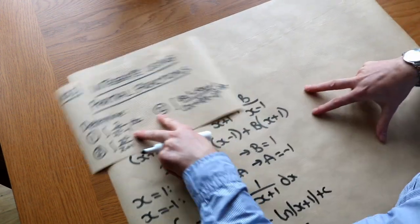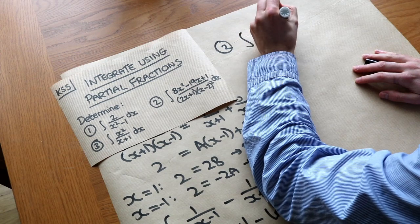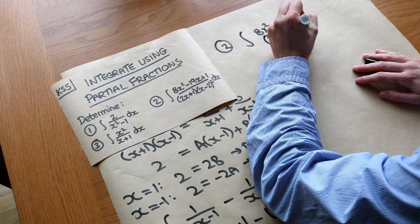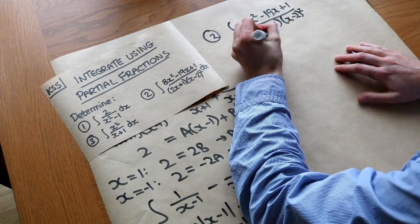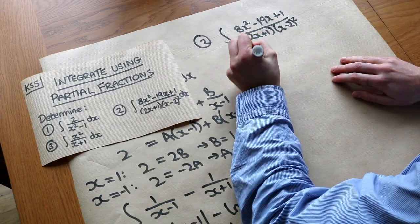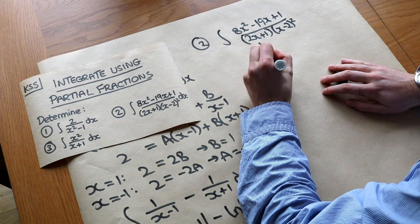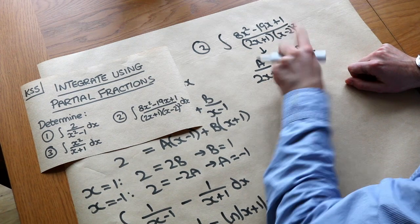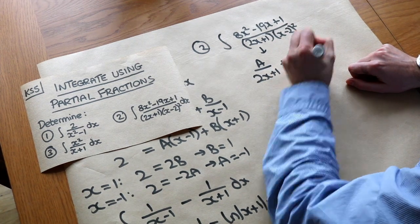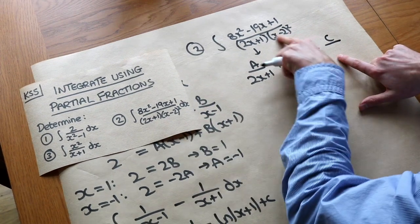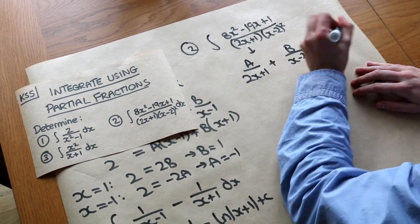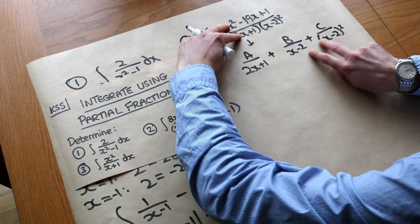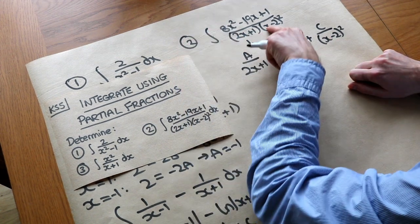Now for the second example: the integral of (8x²-19x+1) over (2x+1)(x-2)². This expression can be written as A over (2x+1). When we have a squared factor in the denominator, we need B over (x-2) and also C over (x-2)². If you can't remember how to do that, go back to the partial fractions video. Multiply both sides by (2x+1)(x-2)².